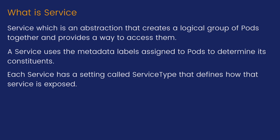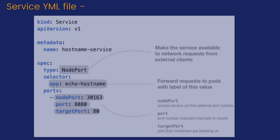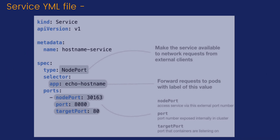There are a couple of types of service, which we define in the service spec. Let's look at the YAML file and understand it. This is a simple YAML file for a service. The first field is 'kind' — the kind of object is 'Service'. The API version we are using is v1. Metadata contains basic information about the service.